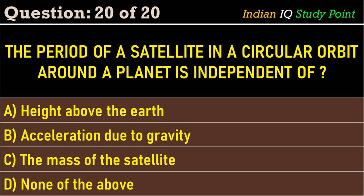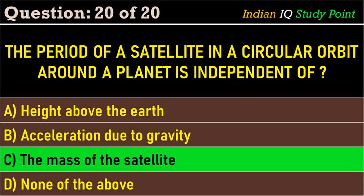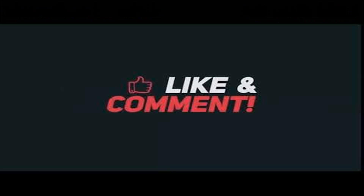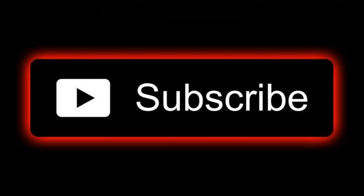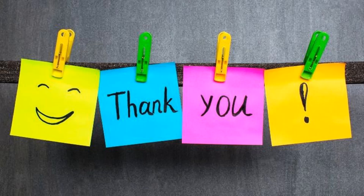Coming to the next question: the period of a satellite in a circular orbit around a planet is independent of — option A: height above the earth. Option B: acceleration due to gravity. Option C: the mass of the satellite. Option D: none of the above. The correct answer is option C: the mass of the satellite. If you like this video, please like, share, and subscribe to my channel. Don't forget to click on the bell icon. Thanks for watching — see you soon with a new video.